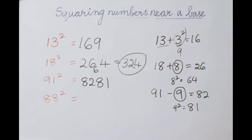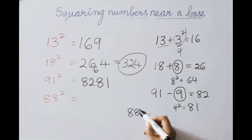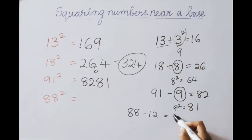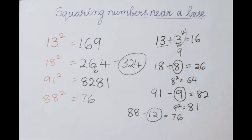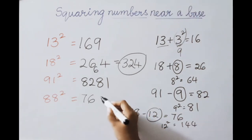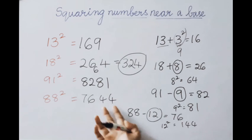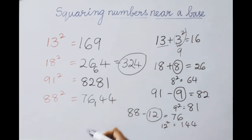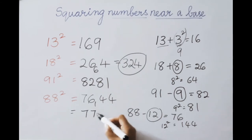Next example: 88 squared. 100 minus 88 equals 12, so the deficient value is 12. Subtract: 88 minus 12 equals 76 — that is the first part answer. Now square the deficient value: 12 squared equals 144. Here only 2 digits are allowed, so write down 44 and carry the 1.